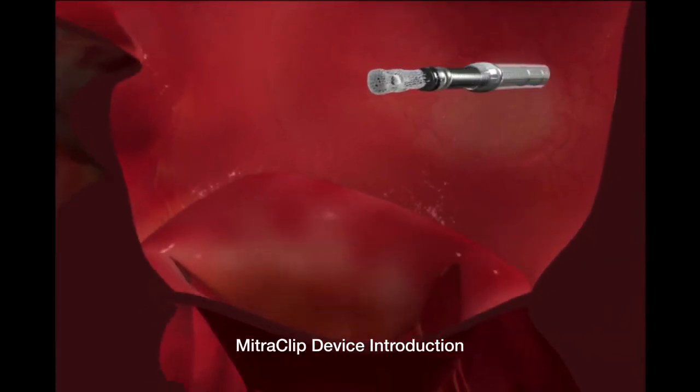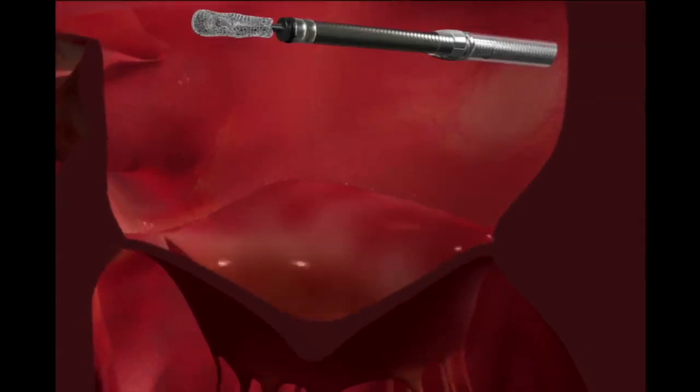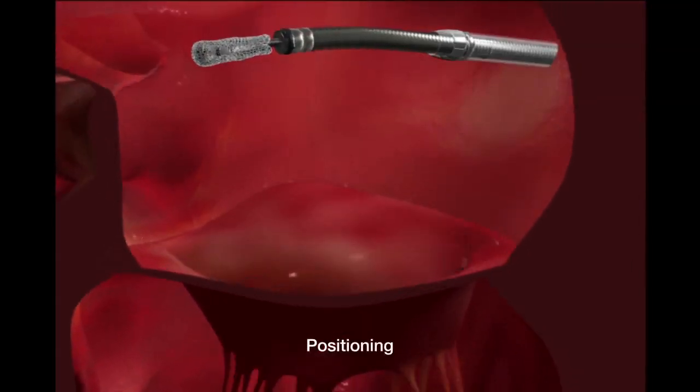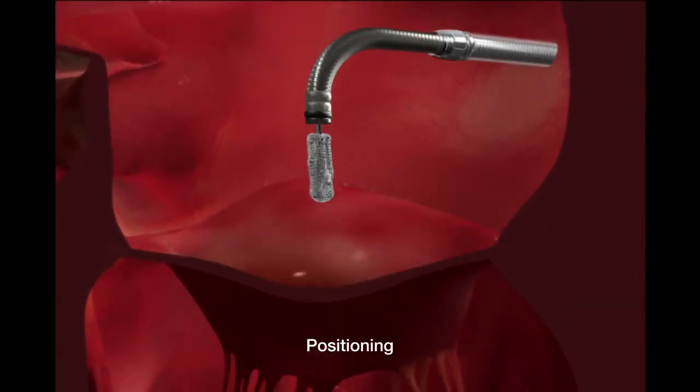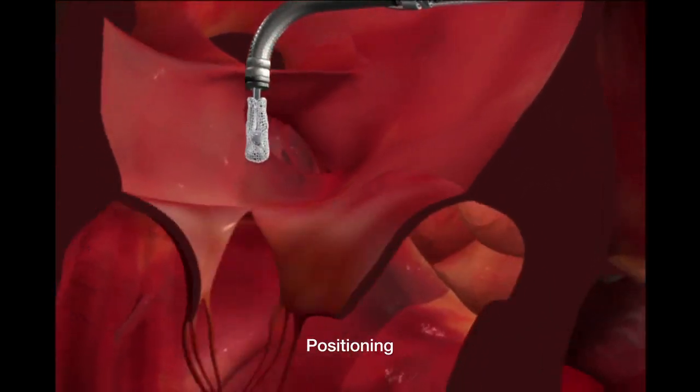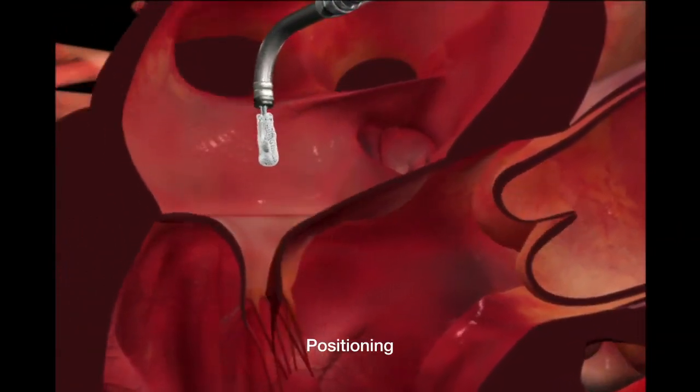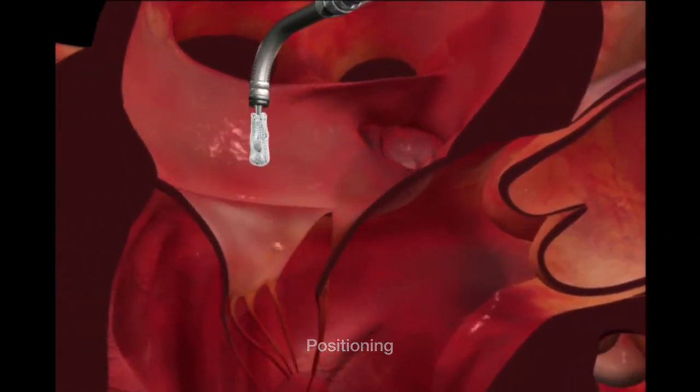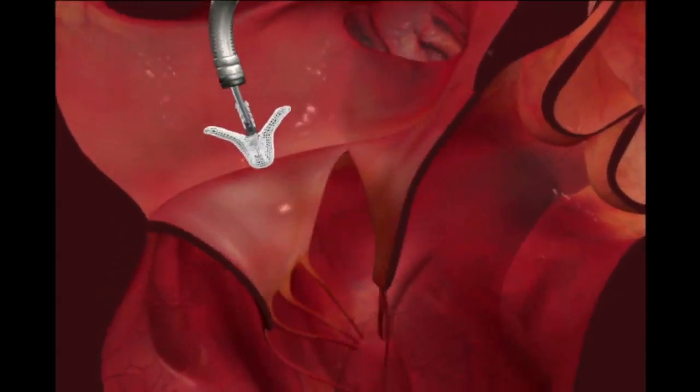The clip is gradually introduced into the left atrium. The clip is precisely positioned above the leak in the valve. The clip arms are opened in the left atrium for final positioning.